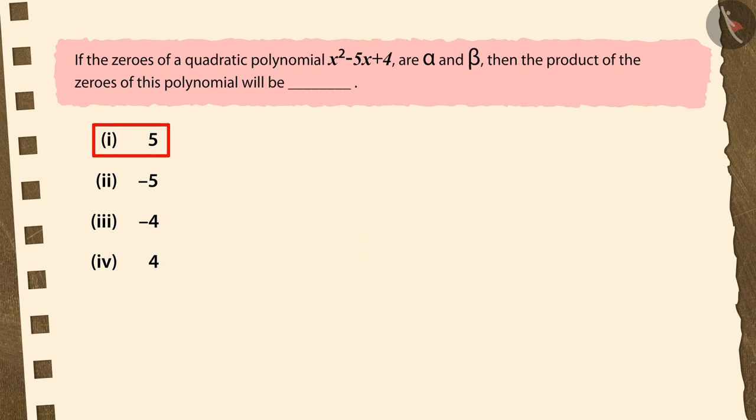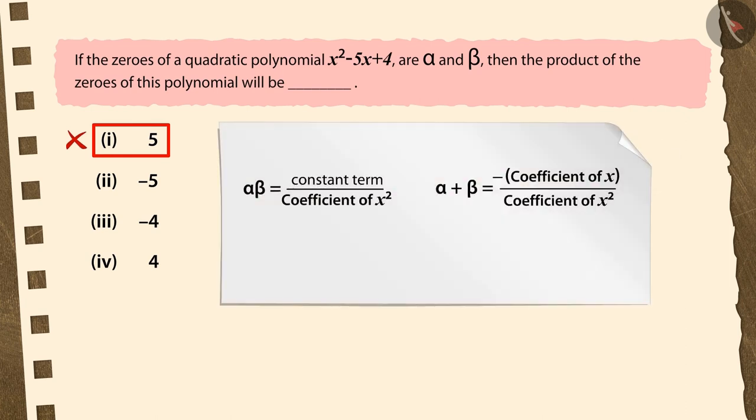If you have selected the first option, then you have chosen the wrong answer. Your answer is incorrect because you used incorrect formula. You did not use the formula for the product of zeros here. You have used the formula for their sum.